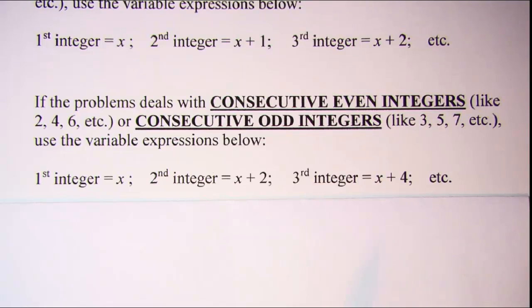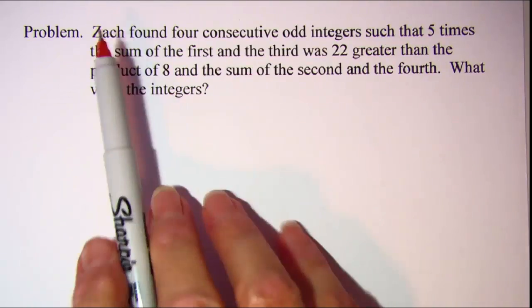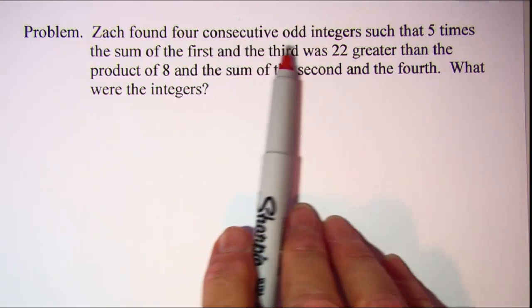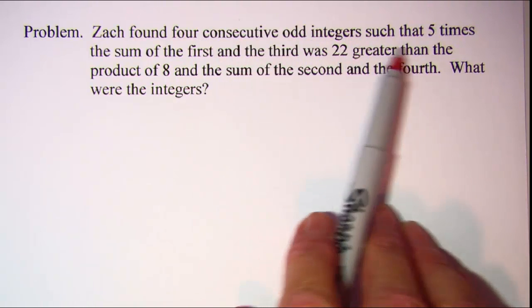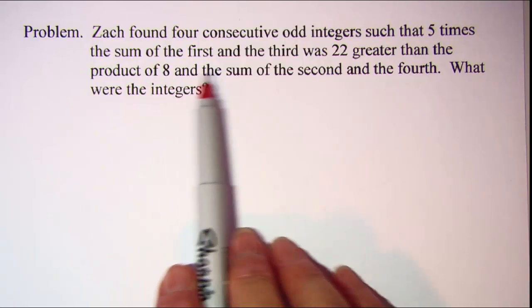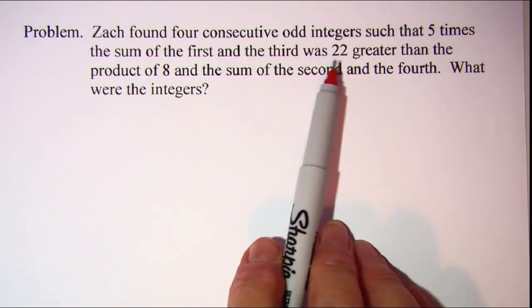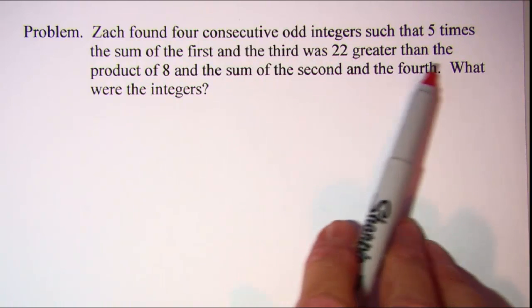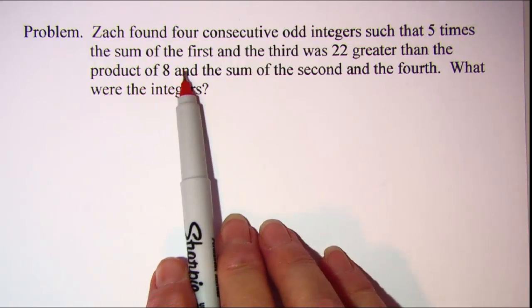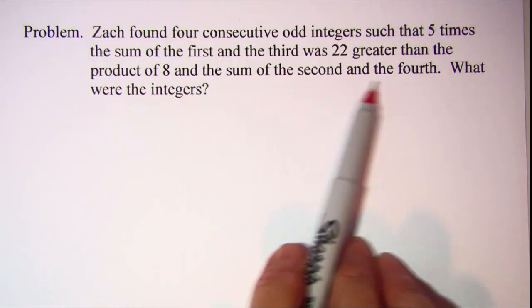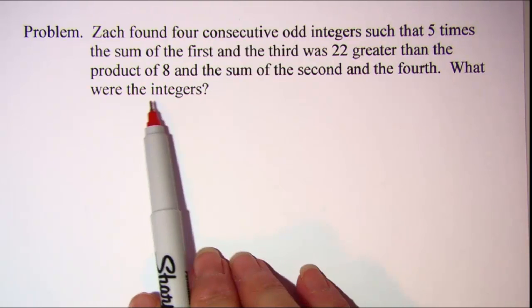Let's do a problem. Zack found four consecutive odd integers such that five times the sum of the first and the third was 22 greater than the product of 8 and the sum of the second and the fourth. What were the integers?